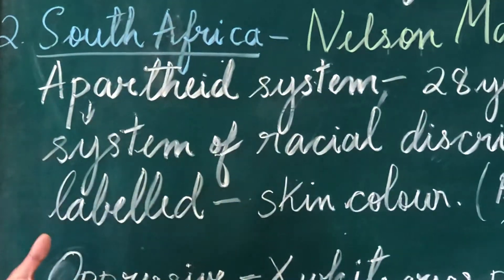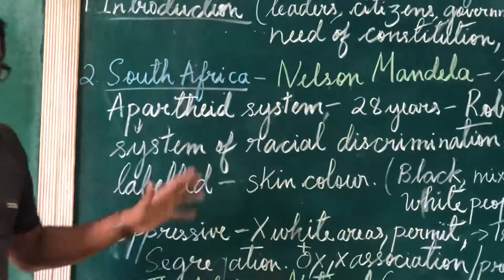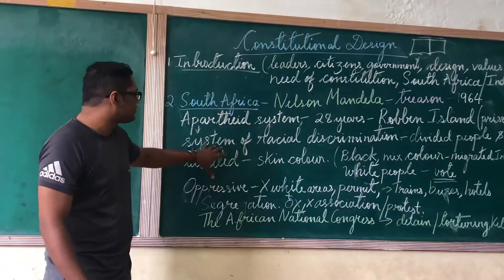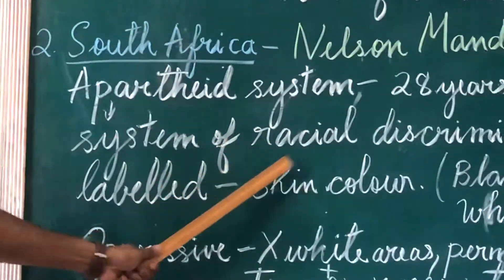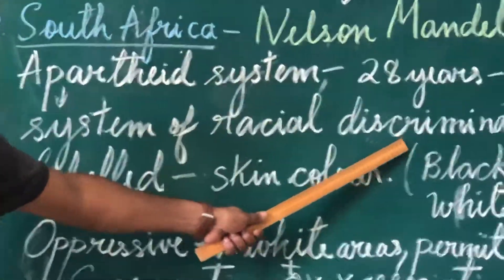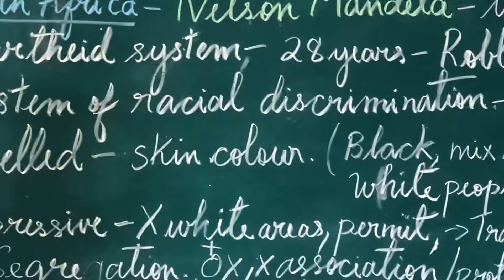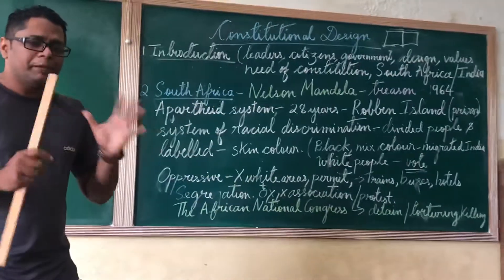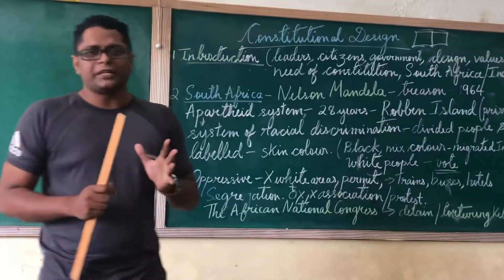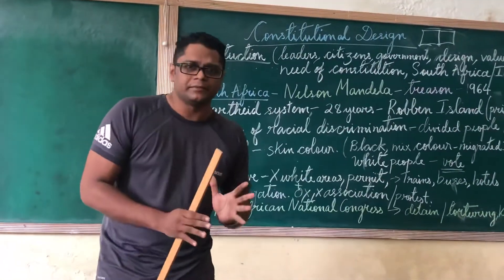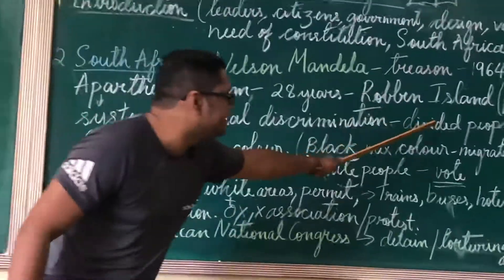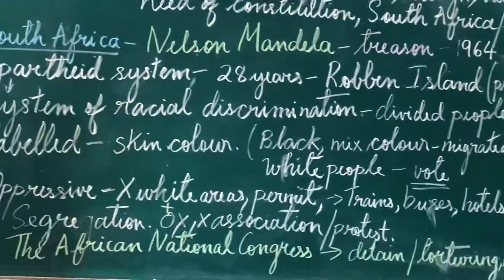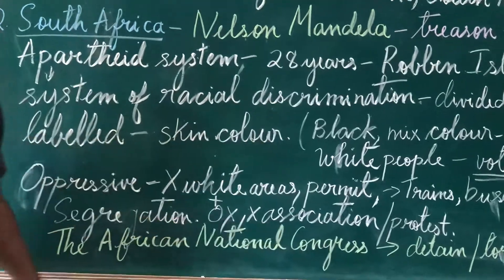There was something called the apartheid system. Now what is the apartheid system? It seems like a big word, but it is very easy — it means a system of racial discrimination. People in South Africa were divided and labeled according to their skin color.